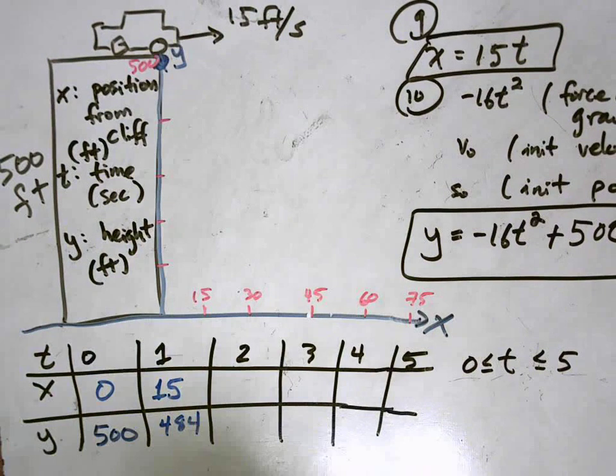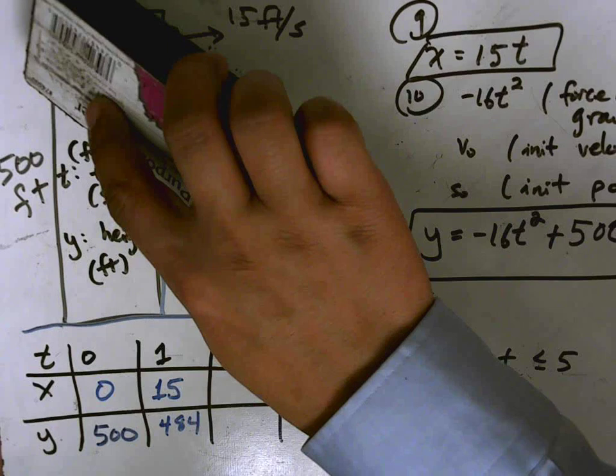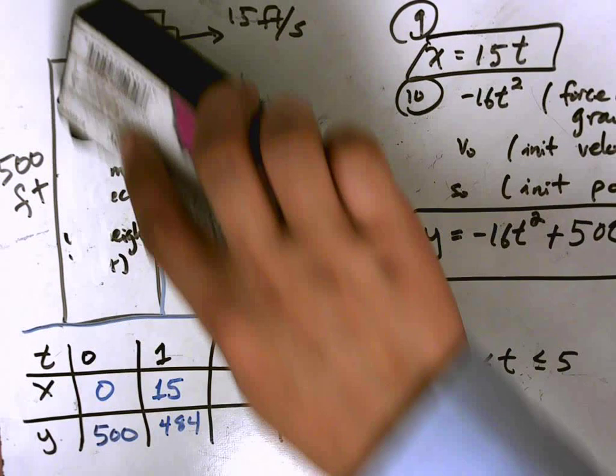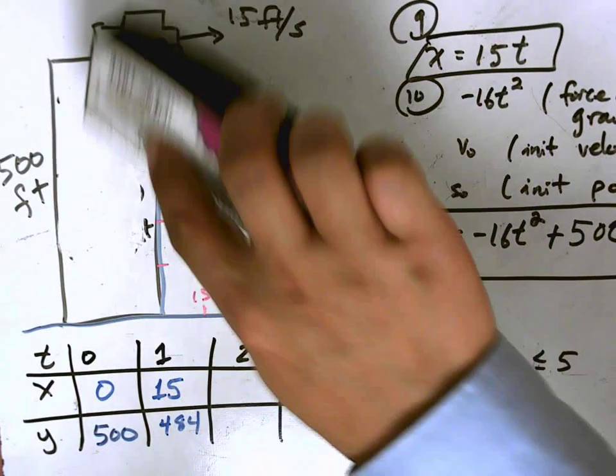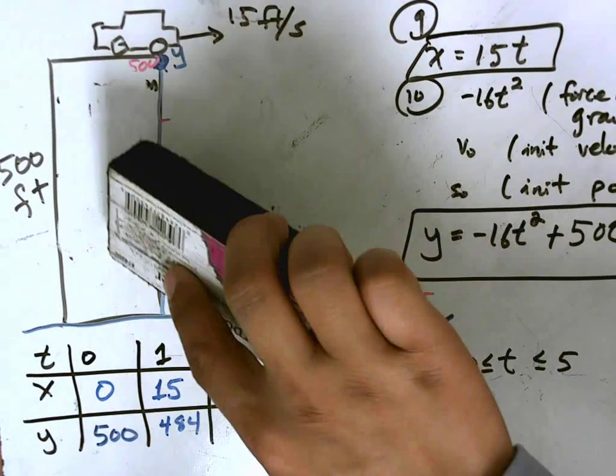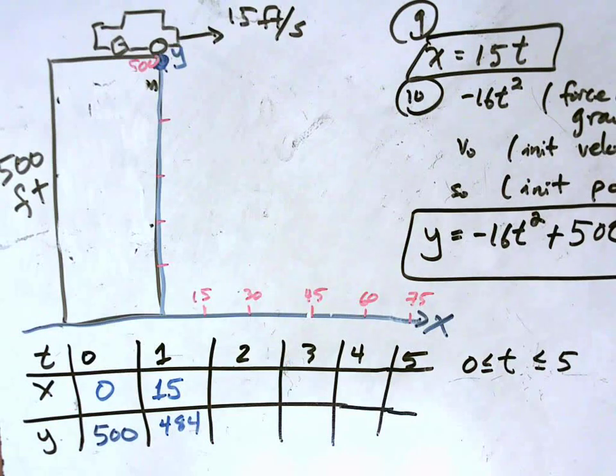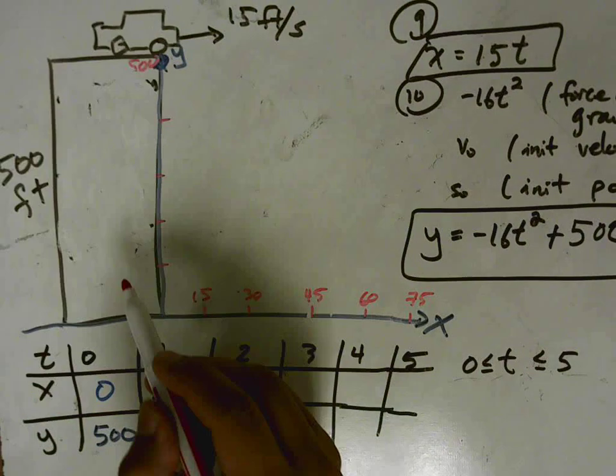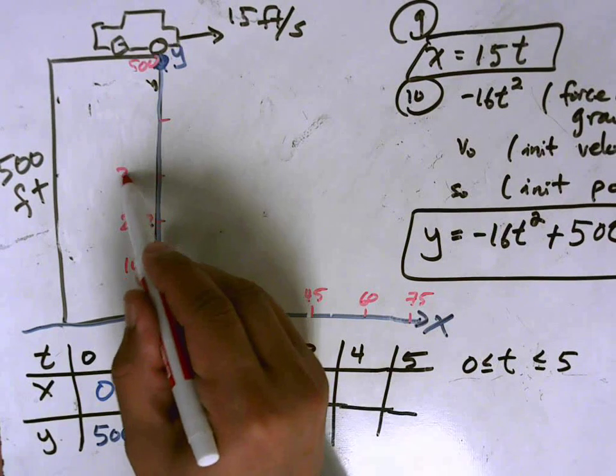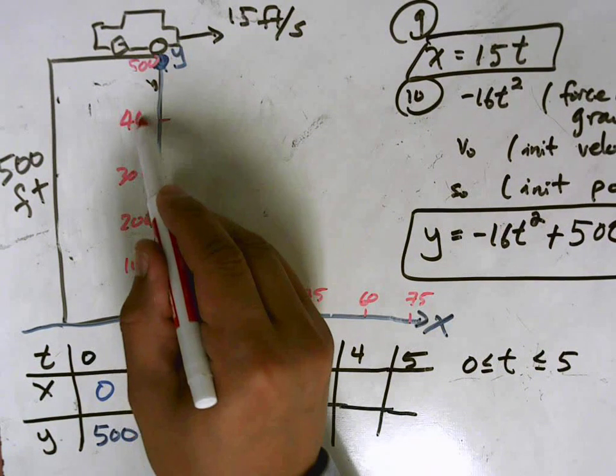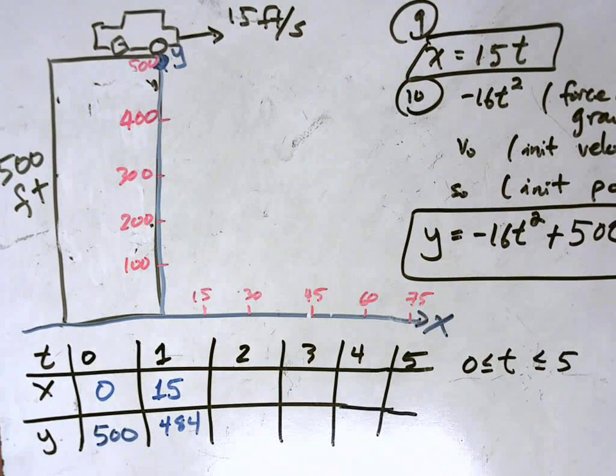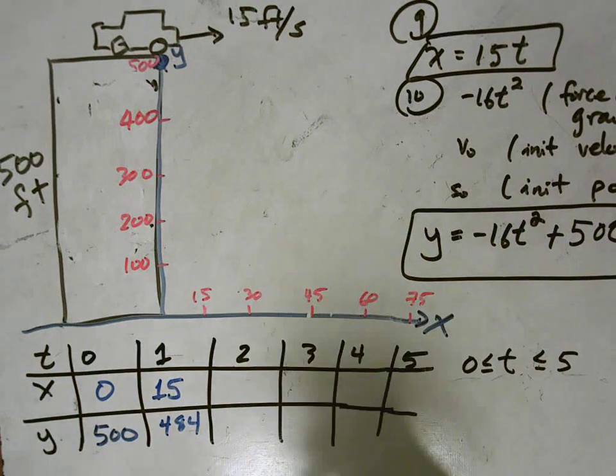So I'm going to erase some of these marks here, some of this information that I wrote in earlier, just so I have enough room to write. So this is at 100, 200, 300, 400, and then 500 at the top. And now I can complete the rest of my table.